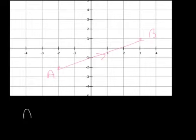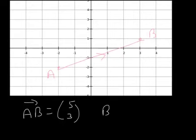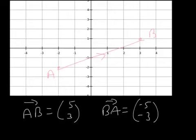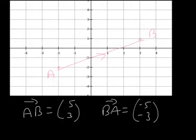Here we've got the vector from A to B which is 5 along and 3 up. The vector from B to A — the same vector but in the opposite direction — is minus 5, minus 3. So AB is (5, 3), BA is (-5, -3), and AB equals minus BA.